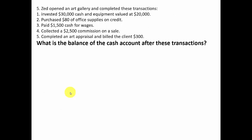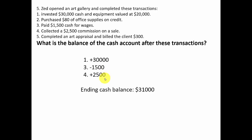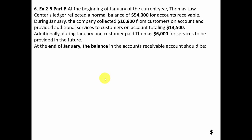Number five: what is the cash account balance after these transactions? We invested thirty thousand dollars cash — cash goes up thirty thousand. Purchasing eighty dollars of supplies on credit has no effect on cash. Paying fifteen hundred dollars in wages decreases cash. Collecting twenty-five hundred dollars in commissions increases cash. Completing an appraisal and billing the client three hundred dollars is revenue but doesn't affect cash. Adding these together, the cash account balance is thirty-one thousand dollars.